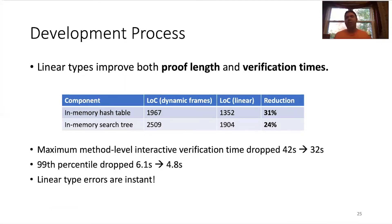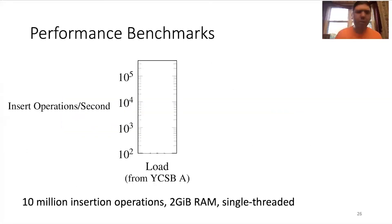Since we added this linear type system, we wanted to try to measure the developer productivity gains. So, we took two components in our code base that we converted to linear types and compared them before and after the conversion. We found that there was a nice reduction in the code length by about 30%. The verification time also drops for individual methods. And just subjectively speaking, we found that it was a lot more pleasant because the linear type errors from the type system were now instant rather than requiring us to wait for the verifier to finish and return an error.